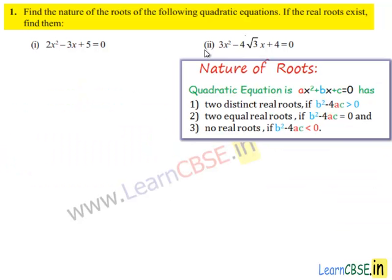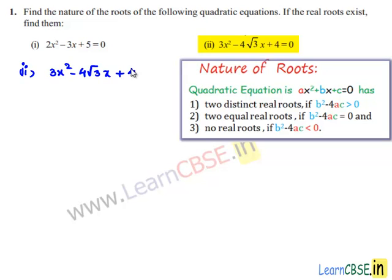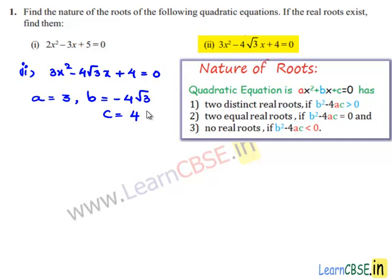Now coming to the second part. The given equation is 3x² - 4√3x + 4 = 0. On comparing with the standard equation ax² + bx + c = 0, we get a = 3, b = -4√3, and c = 4. Now let us find the discriminant b² - 4ac.